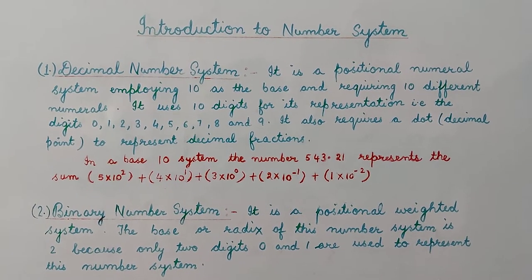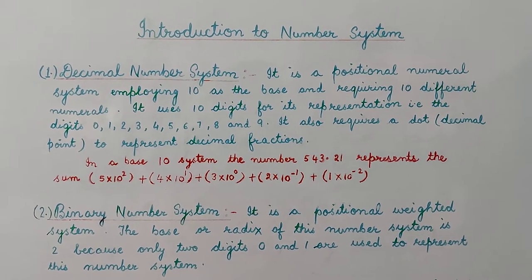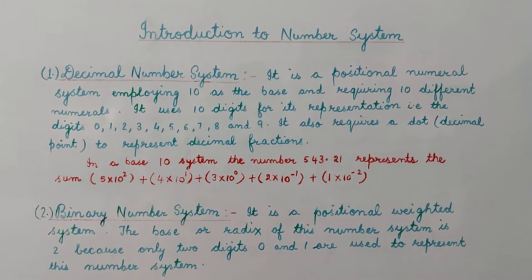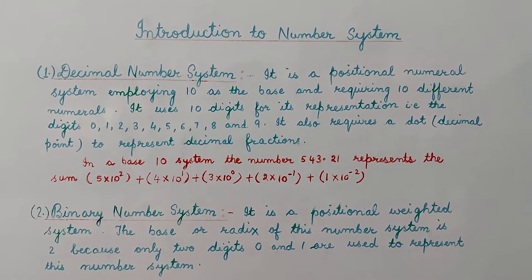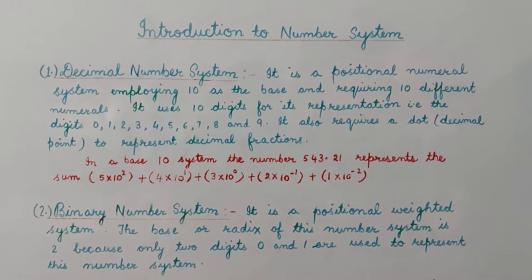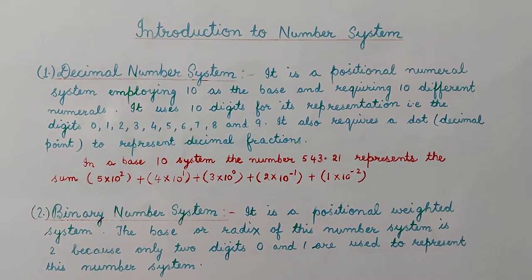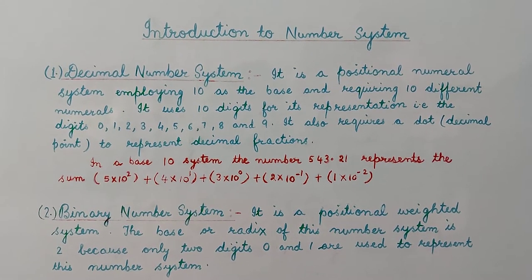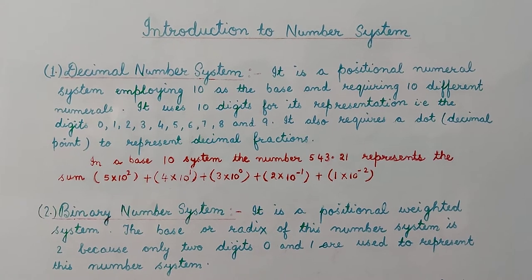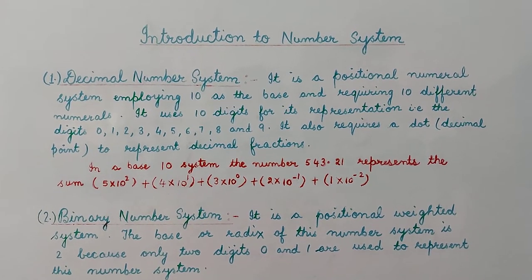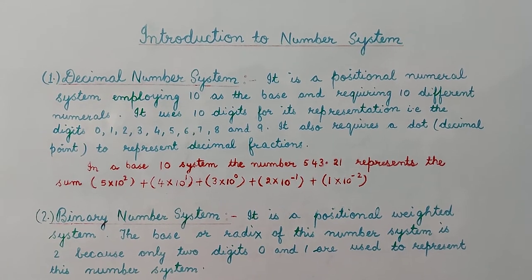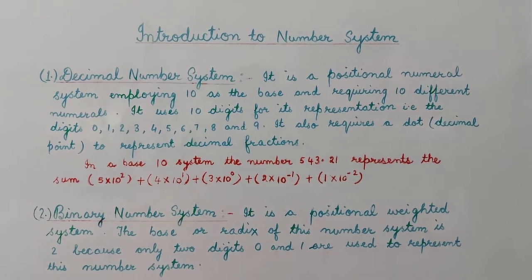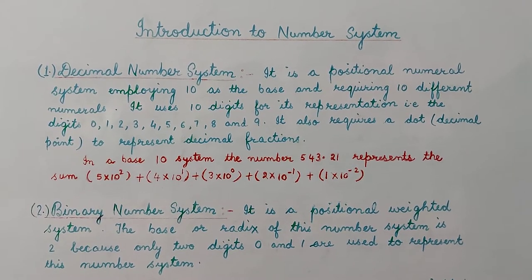The decimal number system also requires a dot or decimal point to represent decimal fractions. So in a base 10 system, we can write the number 543.21 as 5 into 10 to the power 2, plus 4 into 10 to the power 1, plus 3 into 10 to the power 0, plus 2 into 10 to the power minus 1, plus 1 into 10 to the power minus 2.